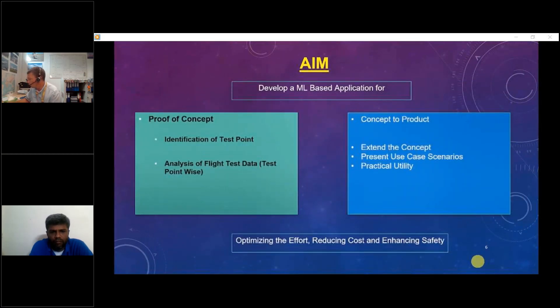The aim is to develop an ML based application for proving the concept, which is identification of test points. We set out to identify the stall and a loop and in effect analysis of that particular flight test data. We will restrict the proof of concept to these two points. Once we have proven this concept, I will explain how this concept can be extended as a product and present use case scenarios. The final aim being, we need to optimize the effort, reduce the cost without jeopardizing flight safety.